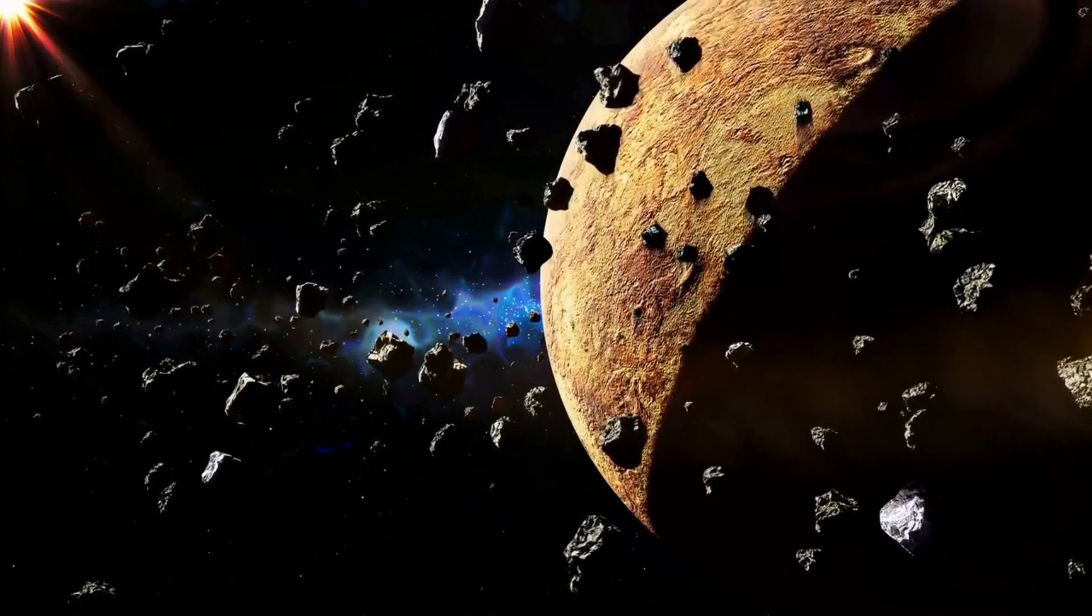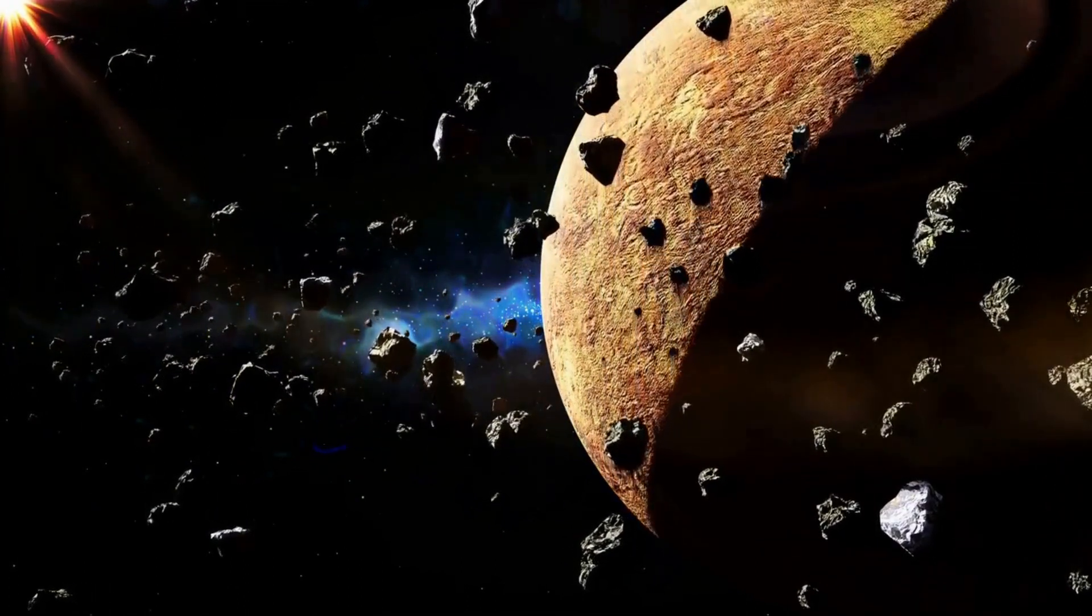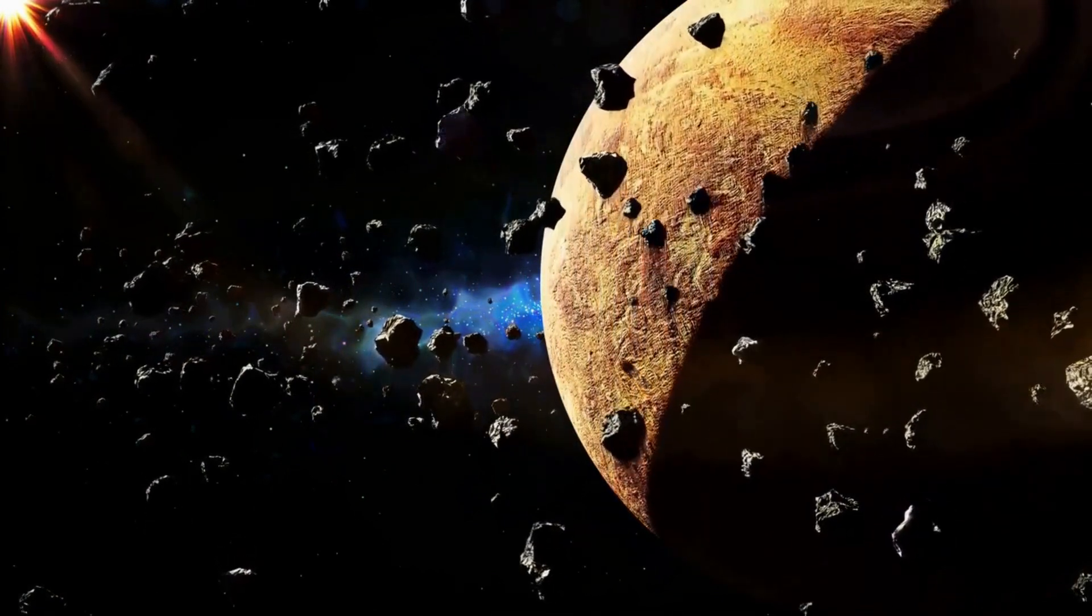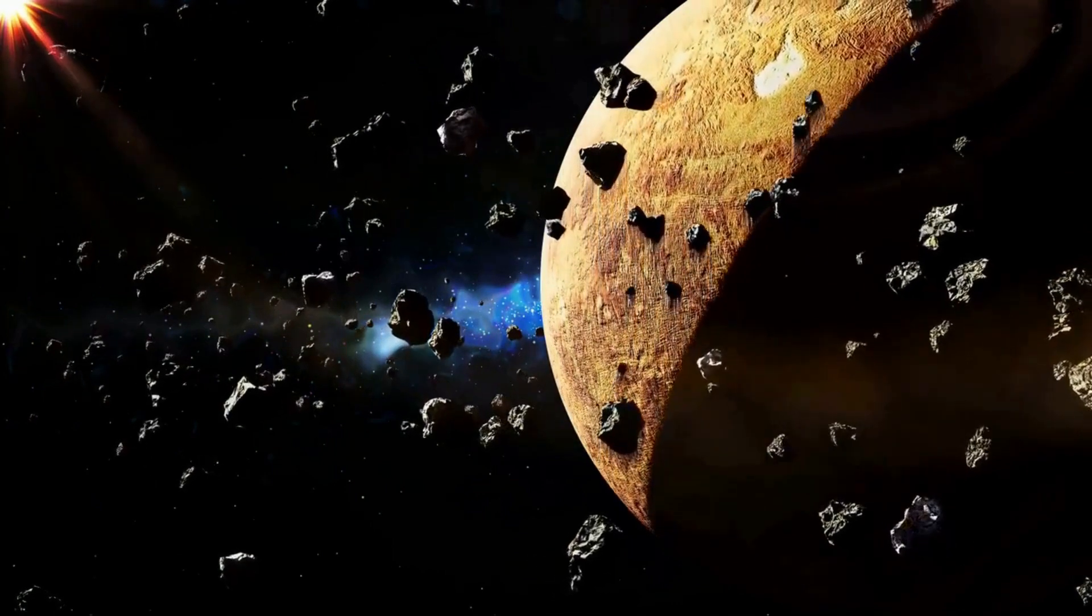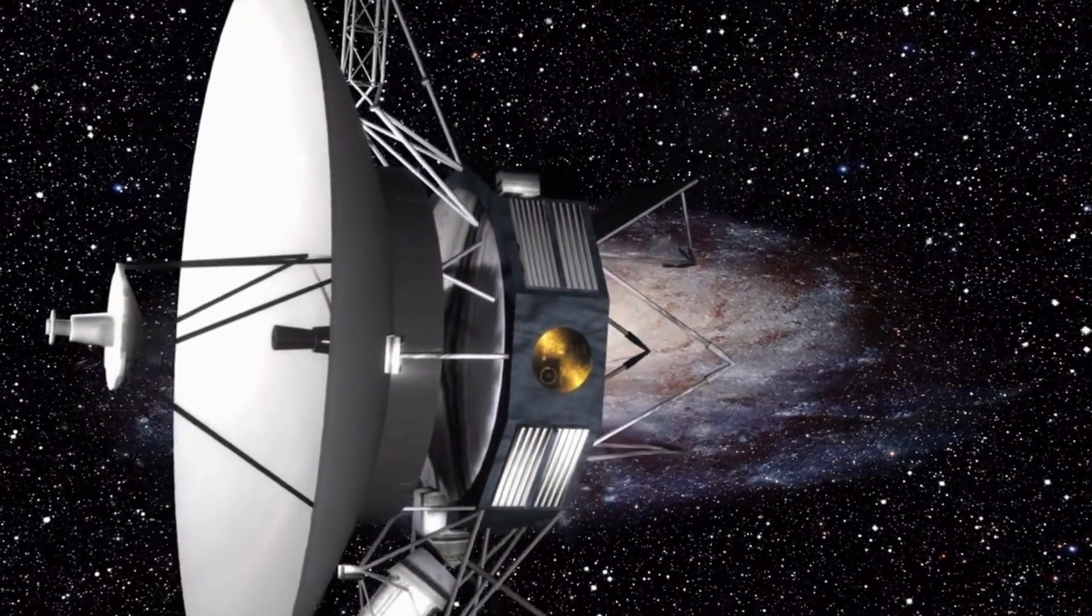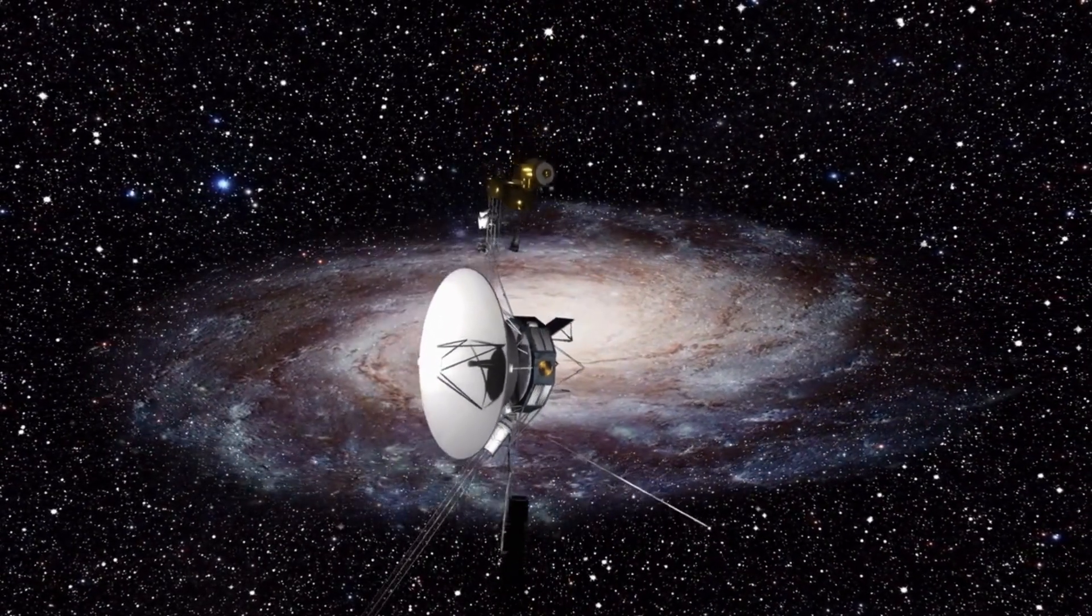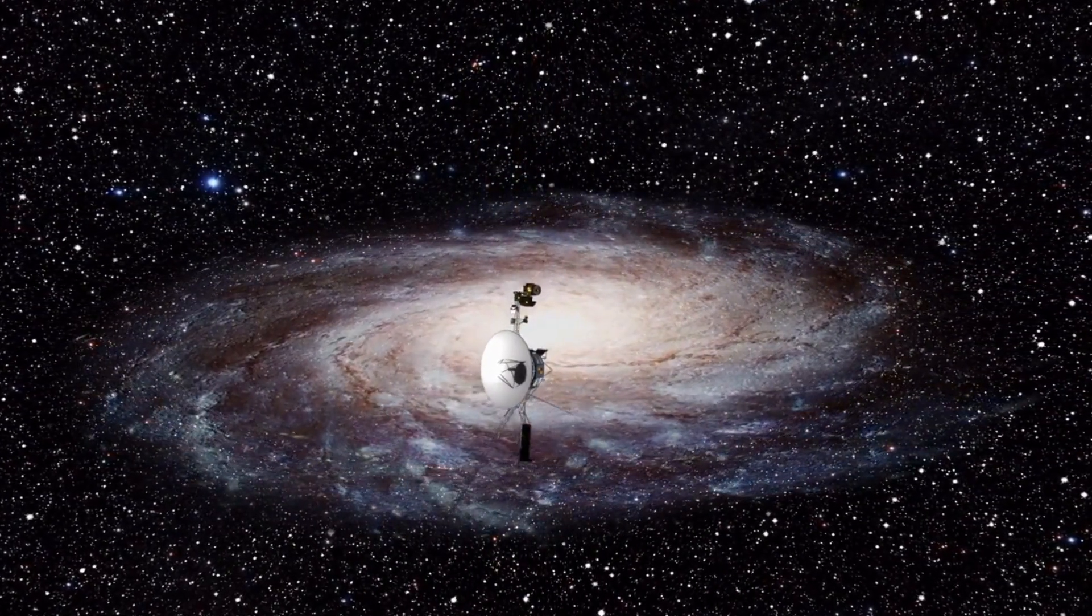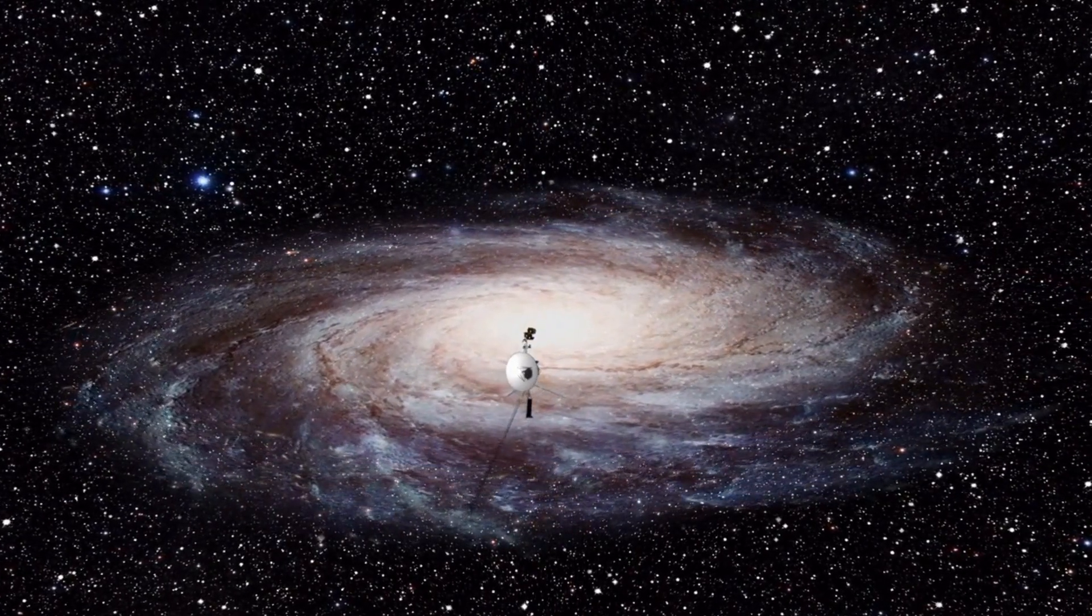Exploring the Kuiper Belt is a challenging task due to its vast distance from Earth and the small size and low reflectivity of many of its objects. The first mission to explore the Kuiper Belt was NASA's New Horizons spacecraft, which flew past Pluto in 2015 and later visited the Kuiper Belt object 2014 MU69 in 2019.